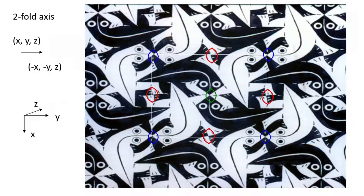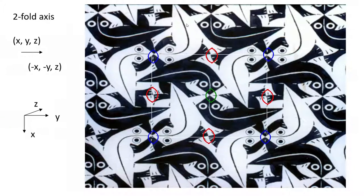If you take this white lizard and that white lizard, these two white lizards are related to each other with respect to this particular point where the noses are intersecting, for example. I have marked a two-fold symmetry at this particular position. That means any point in this object will have an equivalent point in that object — please note the word 'equivalent.' If you take a point x, y, z here, which now represents the two-fold axis, the entire two-dimensional space is filled with two-fold axes.